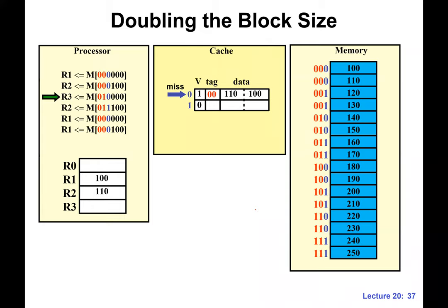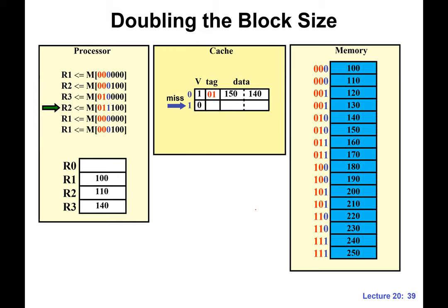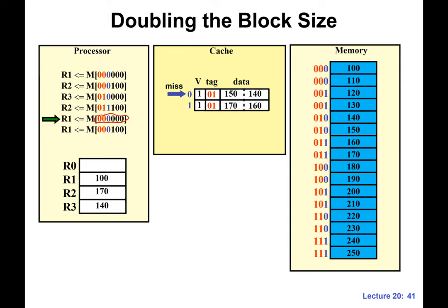The next read is a miss — new address, the block hasn't been loaded yet. We load from the corresponding memory block and update the register. The following read is also a miss for a new address, so we load the second cache line and update the register. The next read is for an old address, but the cache block was evicted — the tag doesn't match — so it's another miss.